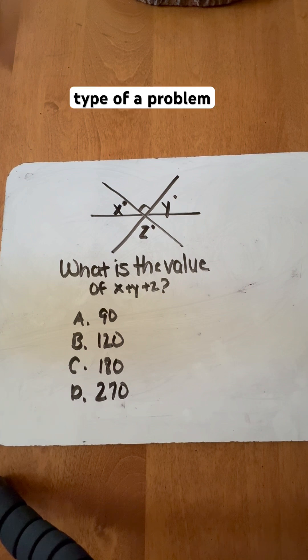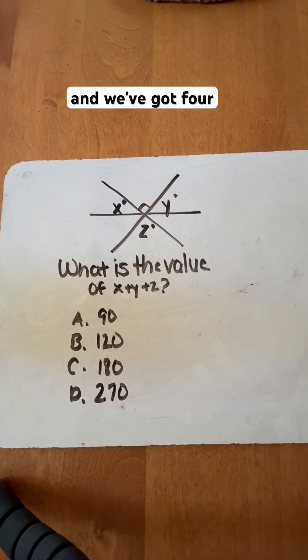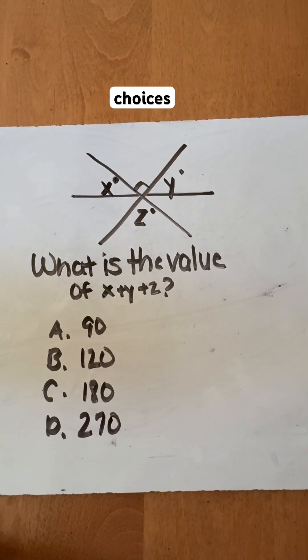When we're looking at this type of problem, we're looking for the value of x, y, and z when added all together, and we've got four options of choices here.